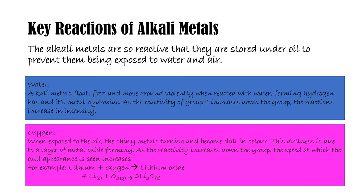The next reaction of alkali metals is with oxygen. When Group 1 metals are exposed to air, they begin to dull. Although they are usually very shiny, when they are exposed to air they start to dull, which is called tarnishing — a layer of metal oxide forming on the metal. As the reactivity increases down the group, the speed at which the dull appearance is seen also increases. For example, if we take lithium with oxygen, it forms lithium oxide, which will be the layer on the lithium metal that causes the dullness.